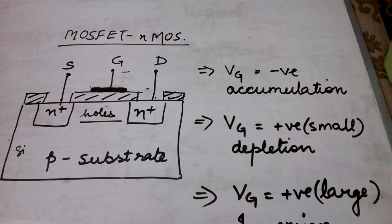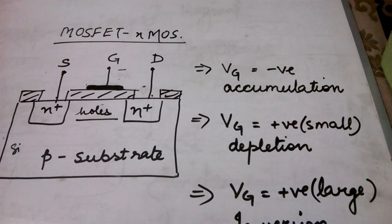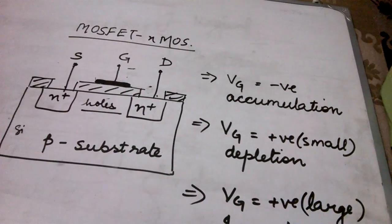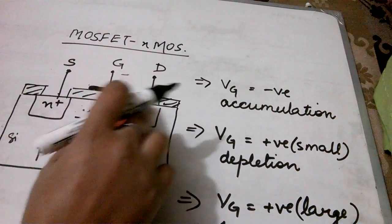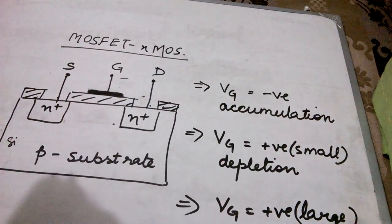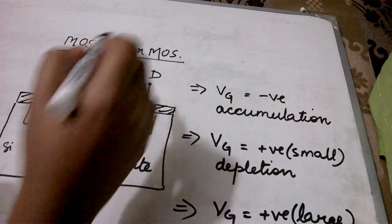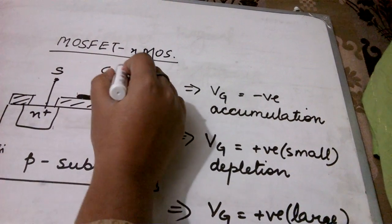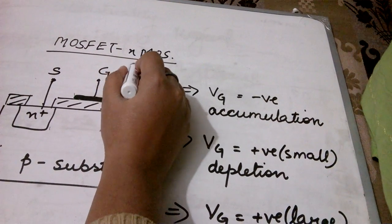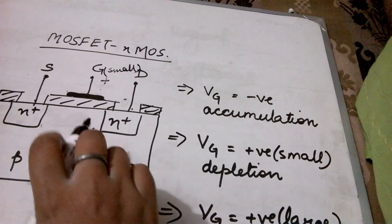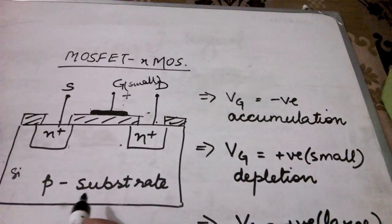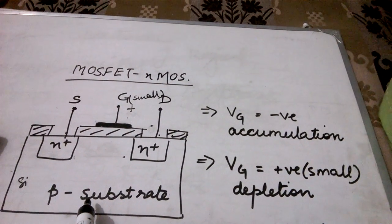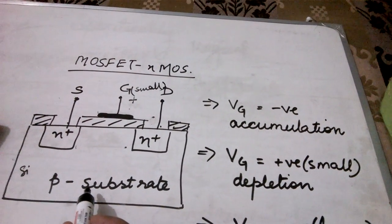Let's come on to the second mode of operation that is the depletion region. Now what happens in the depletion region if I apply a small positive voltage on the gate terminal? A small positive voltage on the gate terminal will attract electrons. Now where will these electrons come from? We know p-type substrate will have electrons as the minority charge carriers.